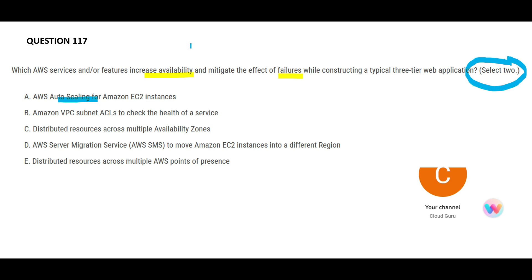If you have an application like amazon.com built on two EC2 instances that can handle 100 concurrent users, and suddenly 100,000 users log in, auto scaling will spawn additional EC2 instances to address those 100,000 concurrent users. This increases your availability — none of the users felt the site was unavailable — and indirectly it avoided a failure because no error was displayed for any user. This is my first answer.